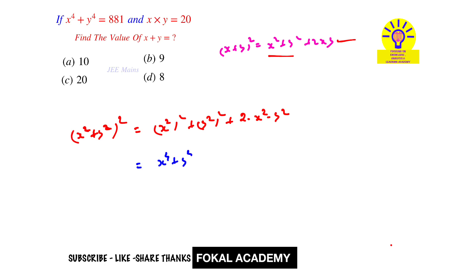Here x power 4 plus y power 4 is given as 881, plus 2 into xy whole squared. xy is given as 20, so 20 squared. Therefore, x square plus y square whole square equals 1681. By further simplification, we get x square plus y square equal to 41.